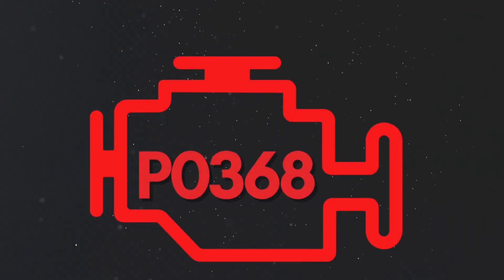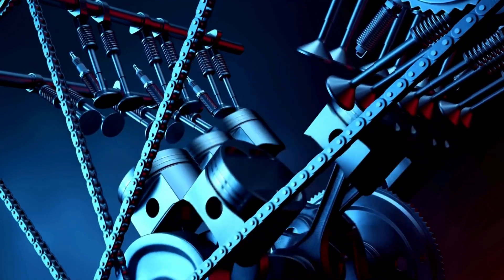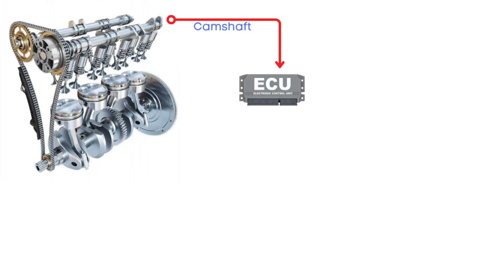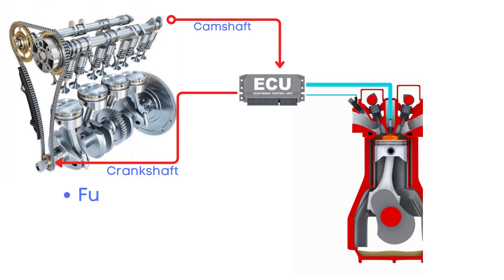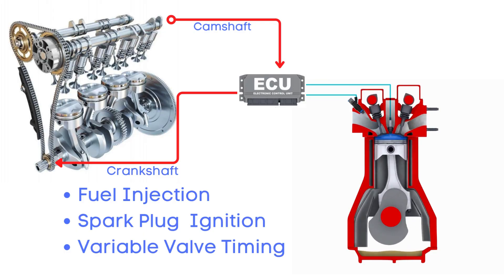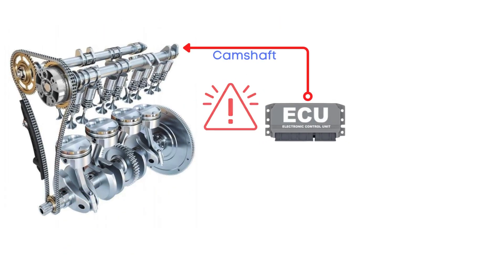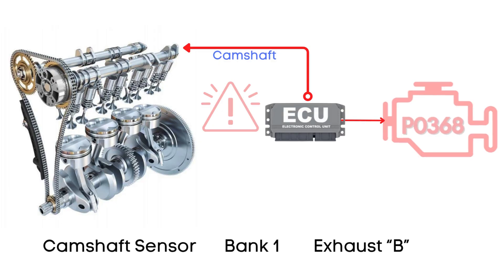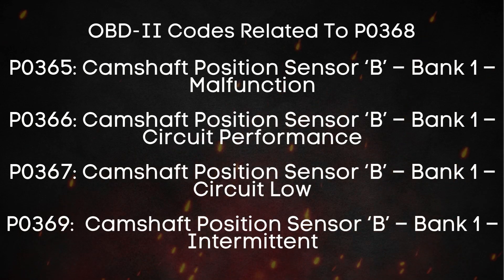Now let's learn why P0368 was triggered. The camshaft position sensor keeps track of the exact position of the camshaft as it rotates, and it constantly sends this signal to the ECU, or engine control unit. The ECU doesn't just rely on this one signal — it also takes in information from the crankshaft position sensor, engine speed, and engine load. With all this data, the ECU can precisely control fuel injection, ignition timing, and even when the valves open and close. But if there's a problem with the camshaft position sensor circuit, the ECU can't get the right camshaft data, and it triggers the P0368 code.